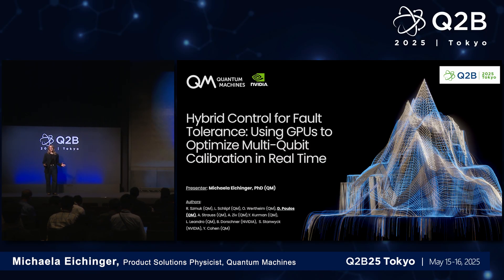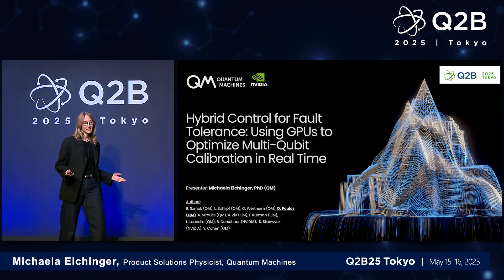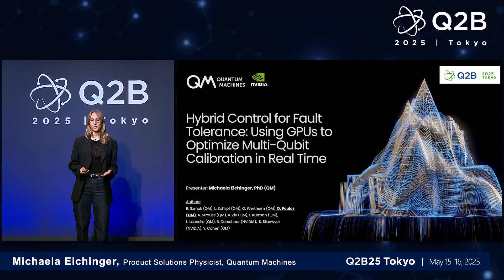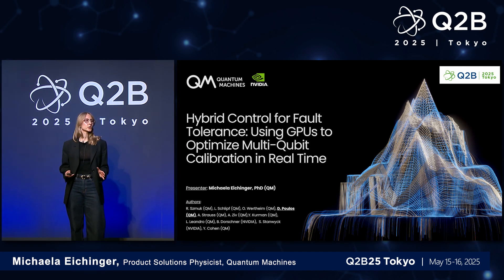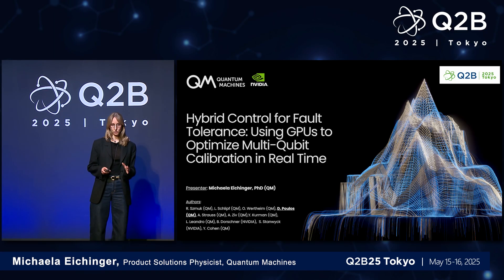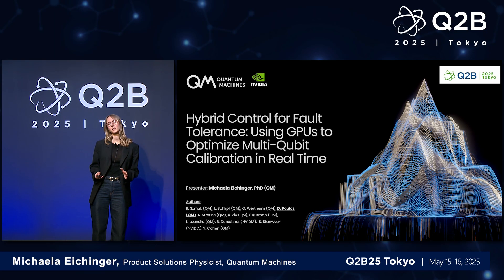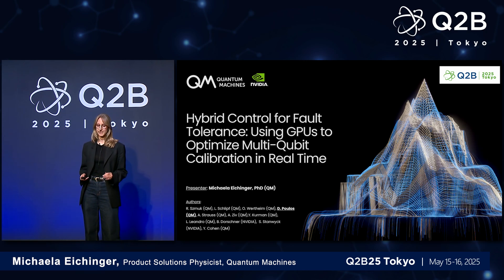Hello everyone. So what's the real bottleneck when we're trying to move forward and achieve fault-tolerant quantum computing? Many people will point to qubit coherence, gate fidelity, or the well-known I/O challenge. But once you achieve very good average and high fidelity across your quantum computing platform, the challenge actually shifts. Because at this point the quantum control stack will determine if you can move forward to quantum error correction and logical operations at scale.